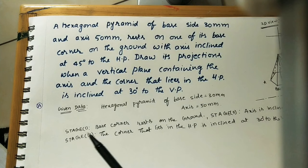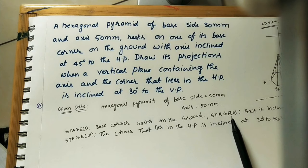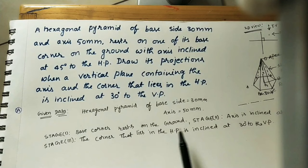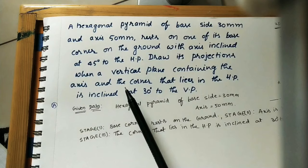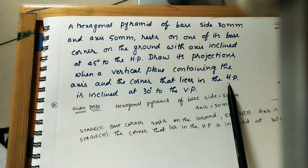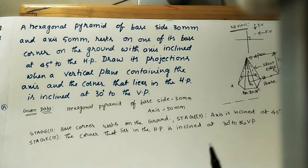The first condition in stage 1 is that the base corner rests on the ground. The second condition in stage 2 is that the axis is inclined at 45 degrees to HP. The third condition in stage 3 is that the corner lying in the HP is inclined at 30 degrees to the VP — meaning whatever corner we initially take, that corner tilts 30 degrees relative to the vertical plane.